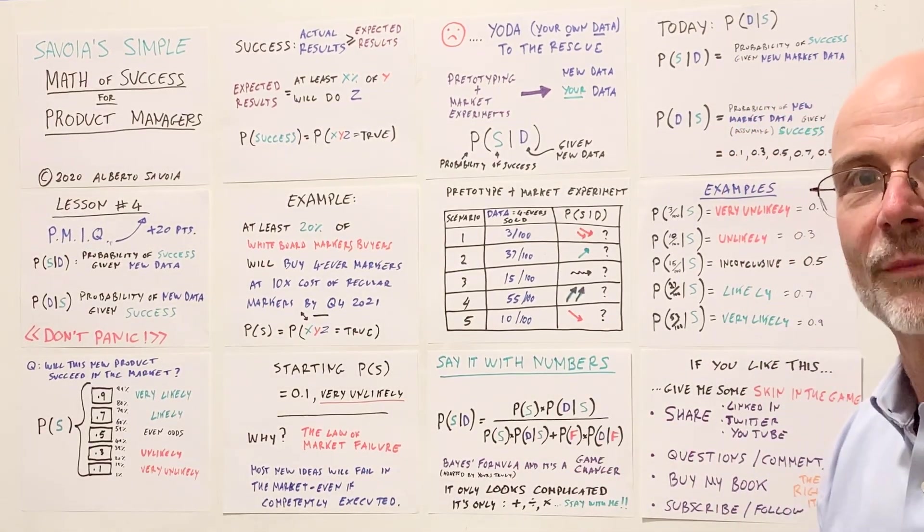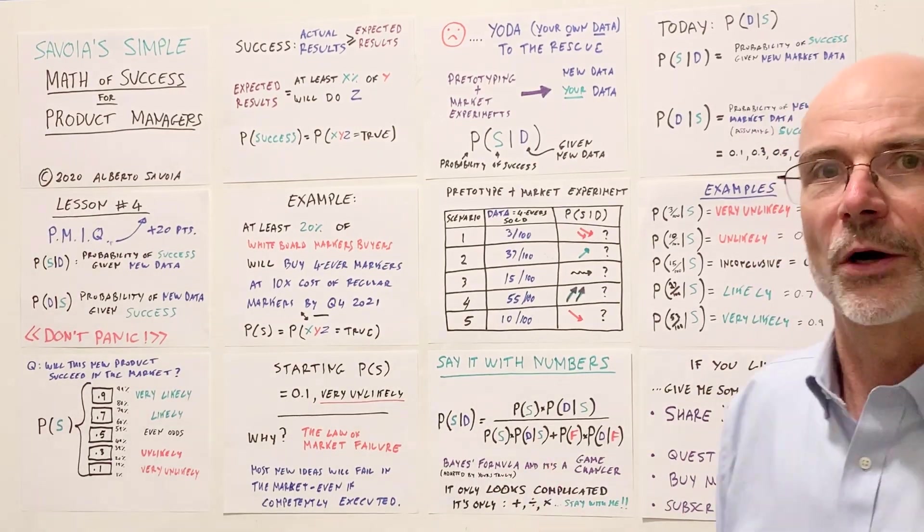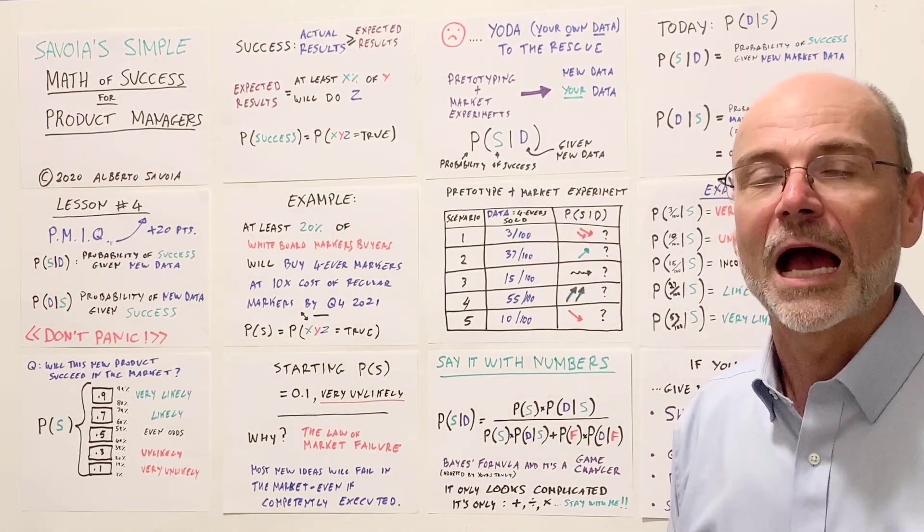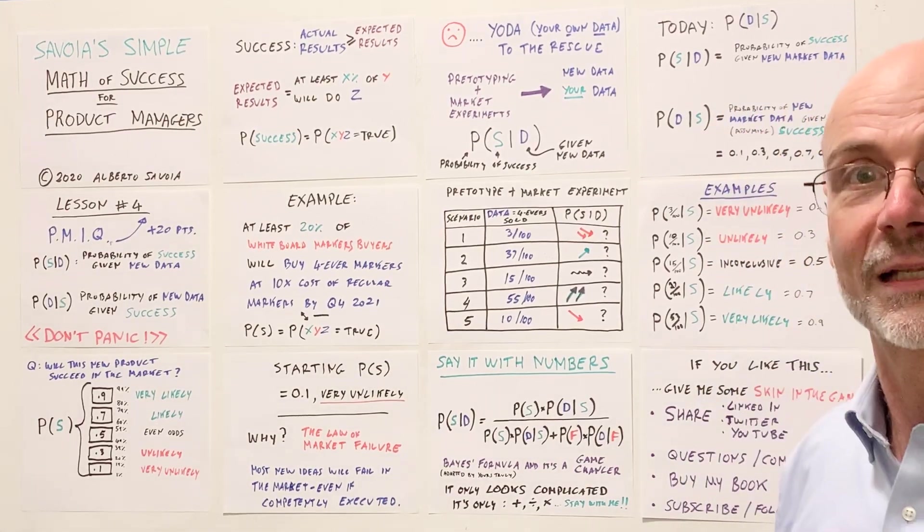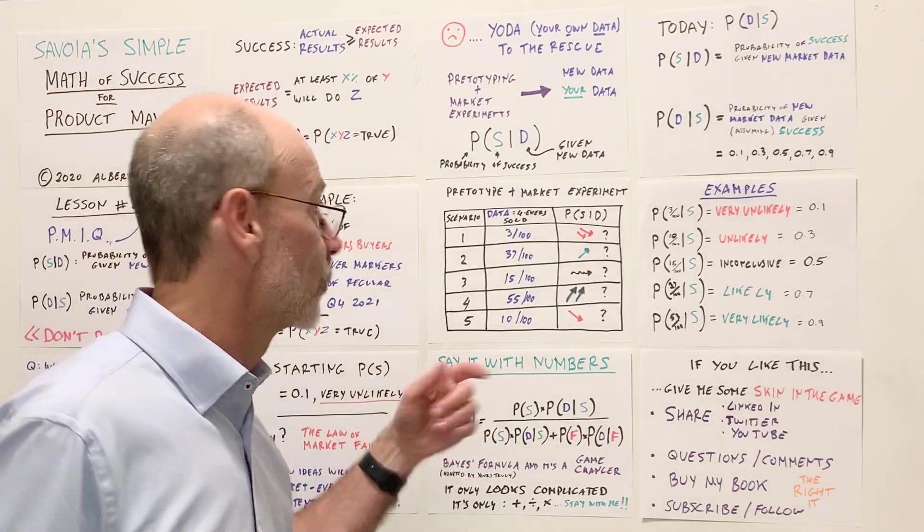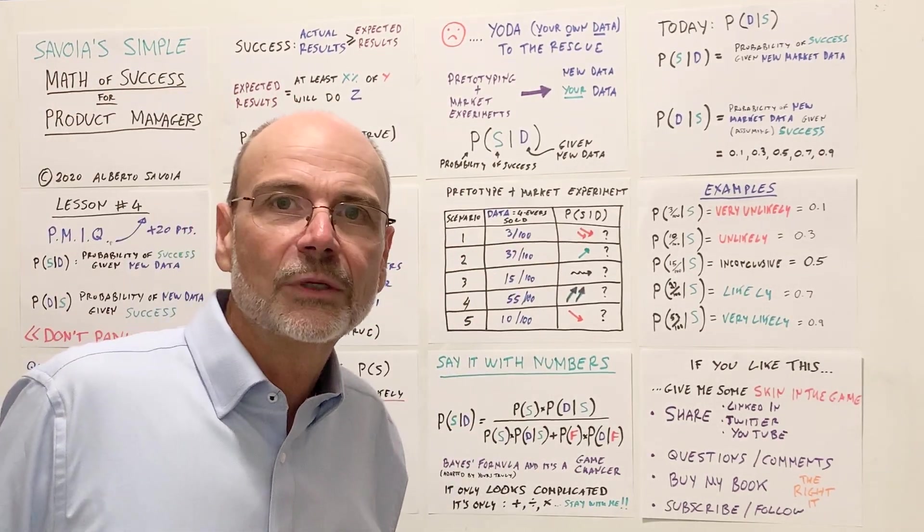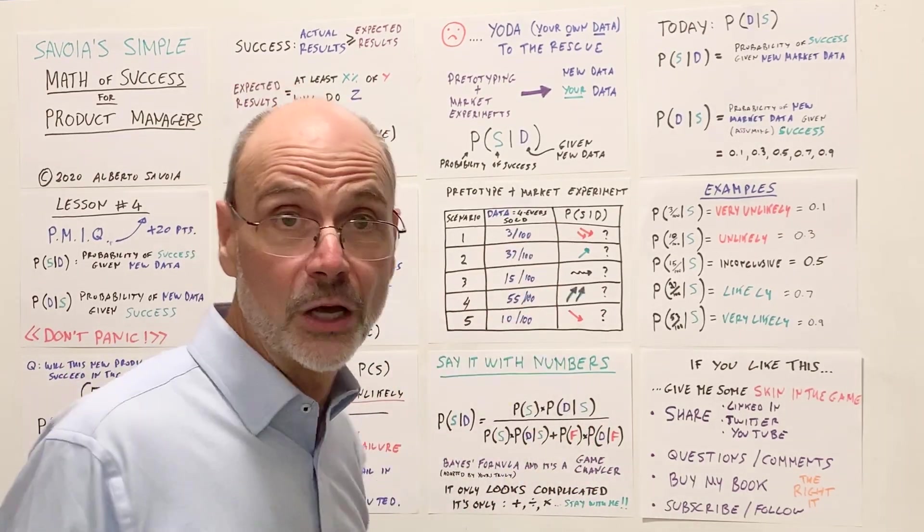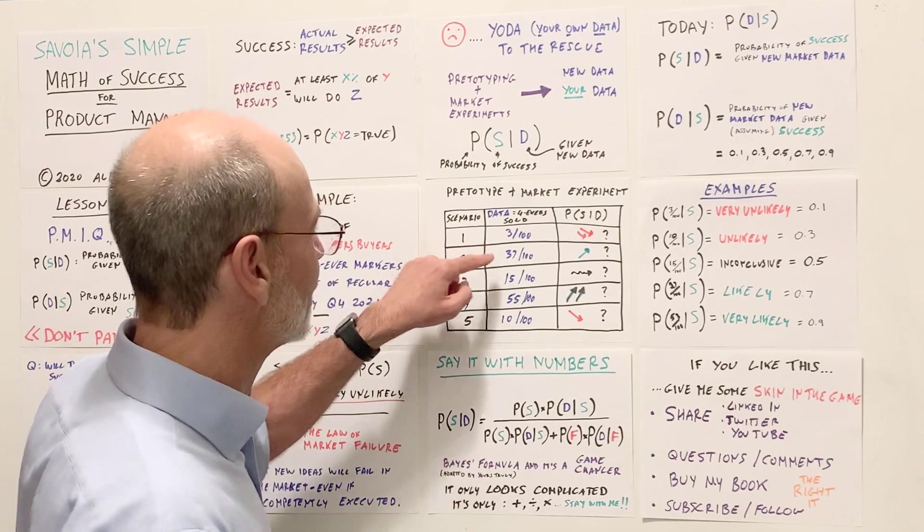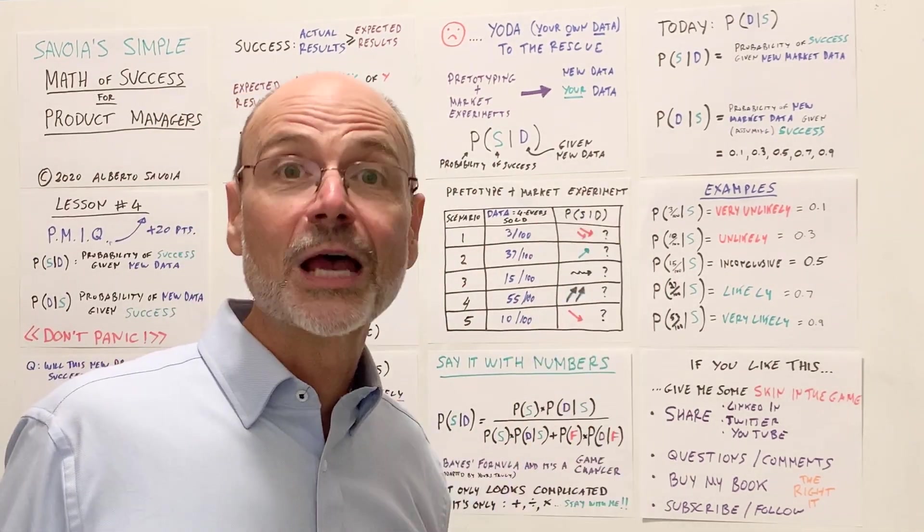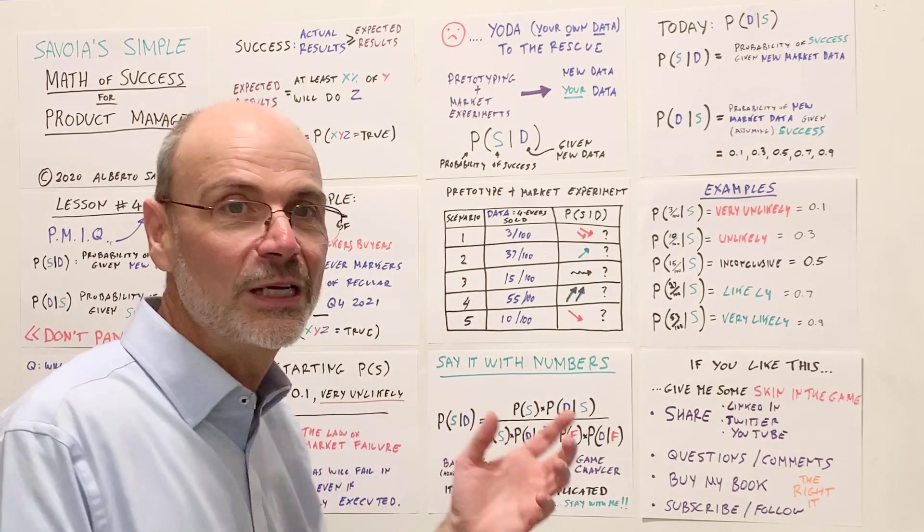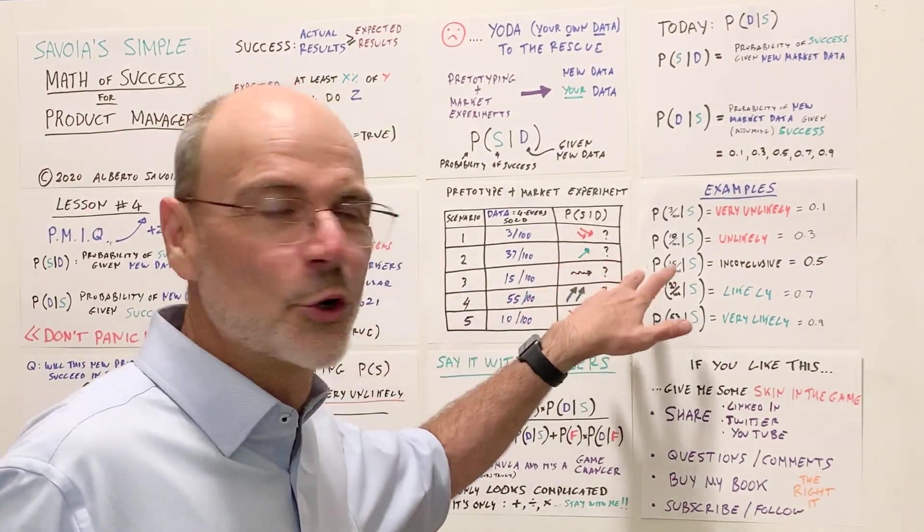So even if you don't want to buy the book, I explain this a lot. So when you do a pretotyping plus a market experiment, you get new data. You get your data. And that's what you need to plug into the formula. So your probability of success, given new data, is a number that hopefully is different than this 0.1. So let's see how we would calculate this. So let's assume an experiment. I take boxes of my markers. Before I develop, I use a pretotype. I take them to market and I try to see if out of 100 people that are buying markers today, say, at Office Depot, see how many of them are interested in buying my new product for 10 times the price of $50 instead of $5. So there are several market scenarios. So in the first one, we sold, we approached 100 people, we only sell three. So what is our probability of success? Well, with this new data, it goes down quite a bit. It goes down a lot.